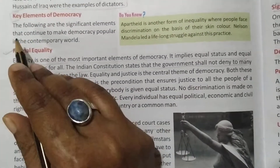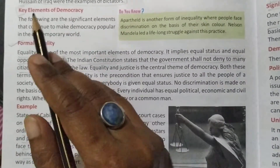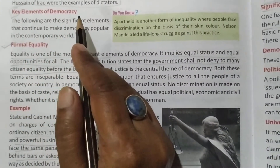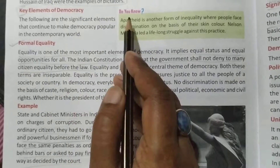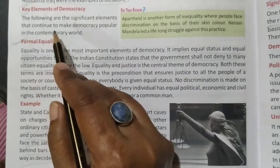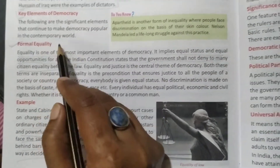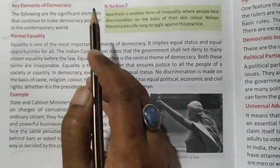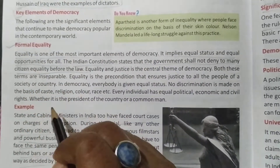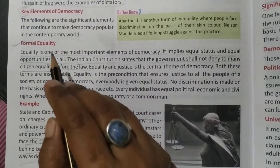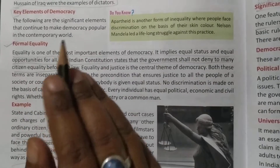Key elements of democracy means democracy ke important features. The following are the significant elements that continue to make democracy popular in the contemporary world. These are the key elements that make democracy popular.